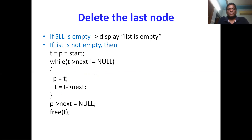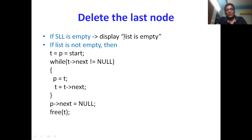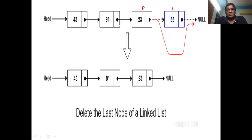Similarly, we can delete the last node from the singly linked list. If there is no element in the singly linked list, the first case is the same for all deletion operations — display 'list is empty'. Otherwise, if the list is not empty and there are some elements, we proceed with the deletion.